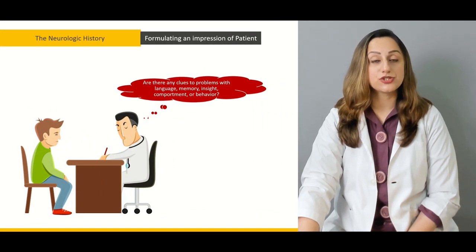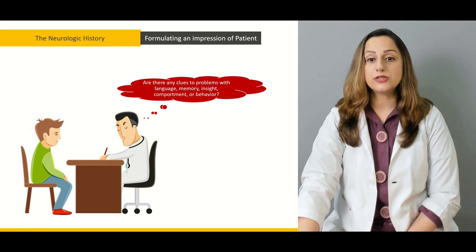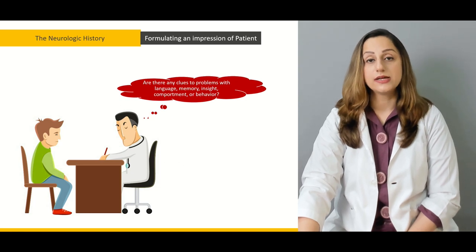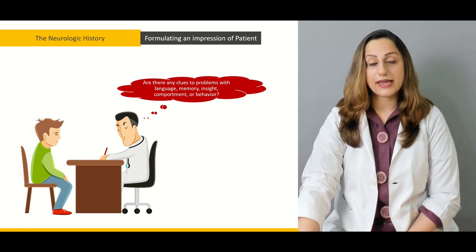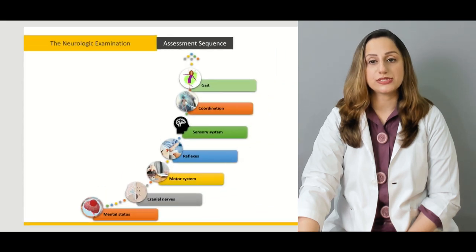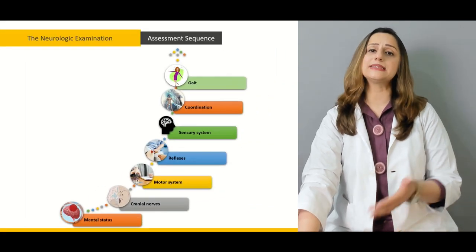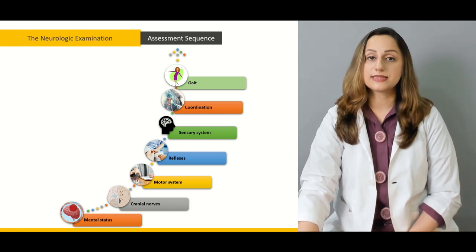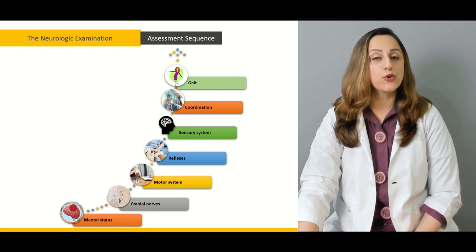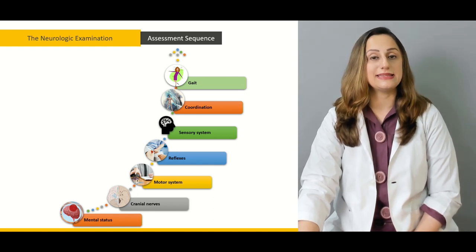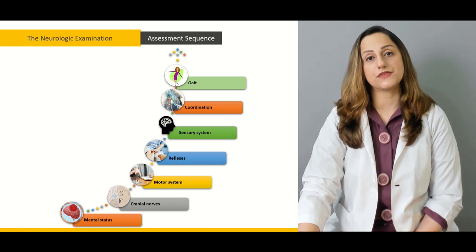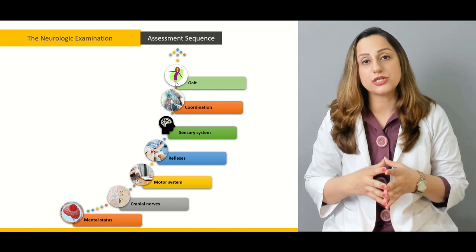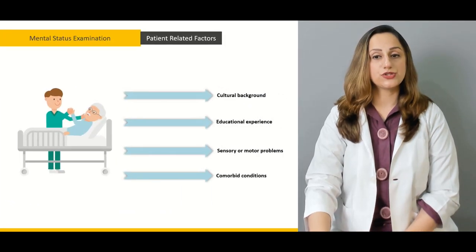Formulating an impression of the patient is a key feature. We'd be looking for clues such as language disorders, memory, insight, comportment, and behavioral disorders that can be elicited while taking the history. The assessment sequence will include gait coordination, sensory systems, reflexes, motor system, and cranial nerve examination, as well as the mental status examination — including how to carry out the mini mental state examination.